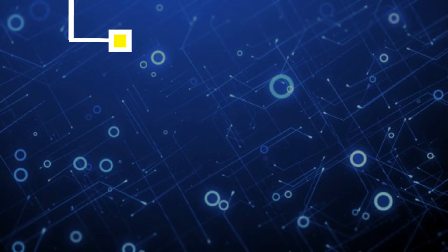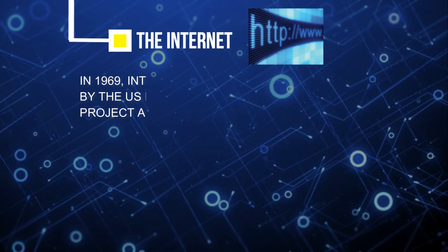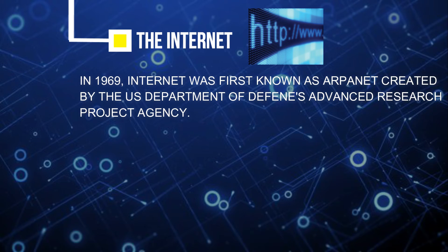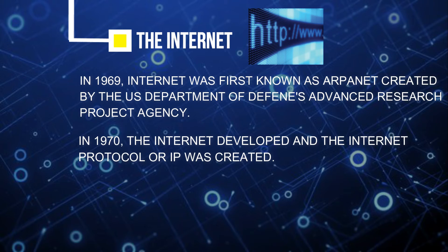Just like any other invention, the internet was improved over time. It was first invented in 1969 by the US Defense Department's Advanced Research Project Agency and was first known as ARPANET. It was used to communicate from one computer to another. During the 1970s, the internet developed continuously and the internet protocol was created, described as the bridge that makes two different computers meet in a virtual space.